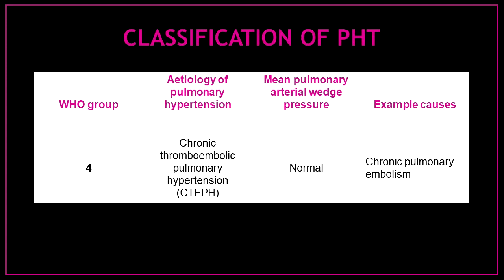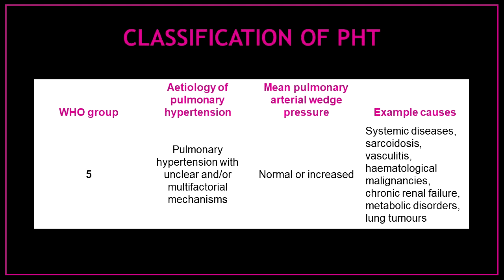In the fourth group are those patients with chronic thromboembolic pulmonary hypertension and a normal mean pulmonary arterial wedge pressure. Some of the causes could be chronic pulmonary embolism. In the last group we can find those patients with pulmonary hypertension with unclear or multifactorial mechanisms. The mean pulmonary arterial wedge pressure could be normal or increased, and causes could include systemic diseases, sarcoidosis, vasculitis, hematological malignancies, chronic renal failure, metabolic disorders, or lung tumors.